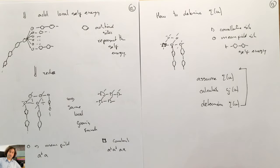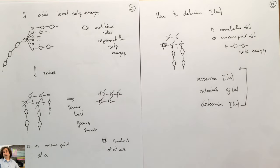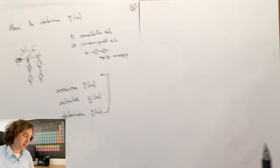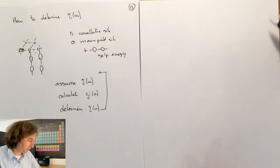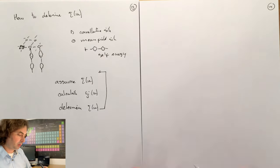This is a very similar self-consistency loop to density functional theory — where you do self-consistency on the density — but here you do the self-consistency on the self-energy or the one-particle Green's function.